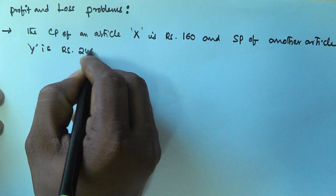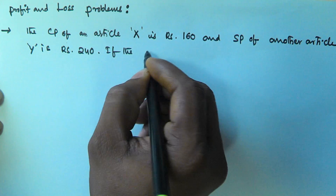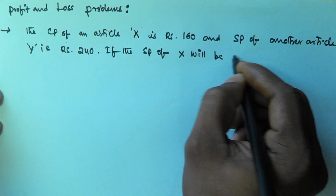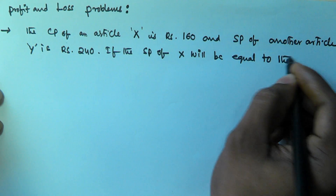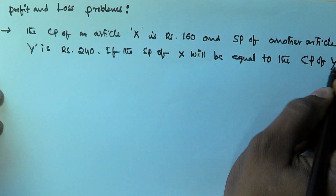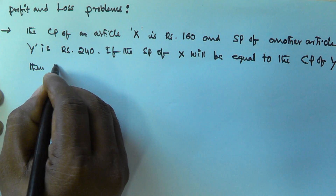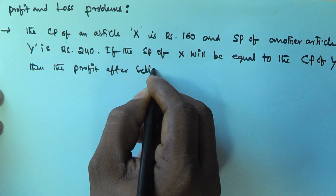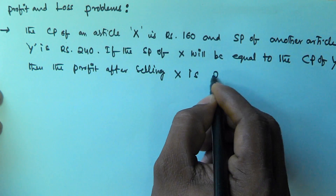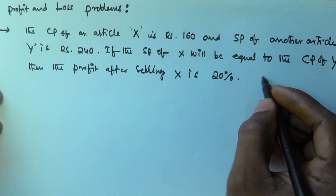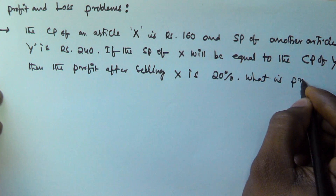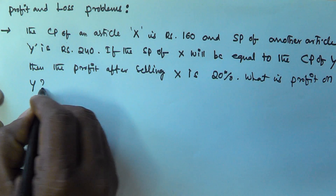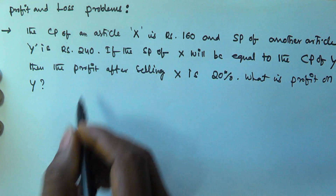...rupees 240. If the selling price of X is equal to the cost price of Y, then the profit after selling X is 20 percent. So what is the profit on Y?